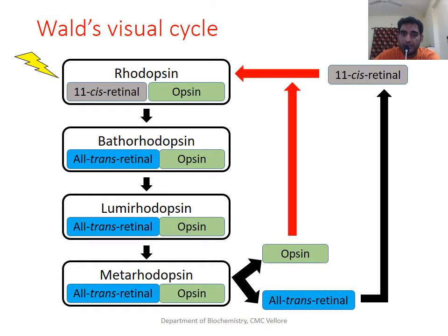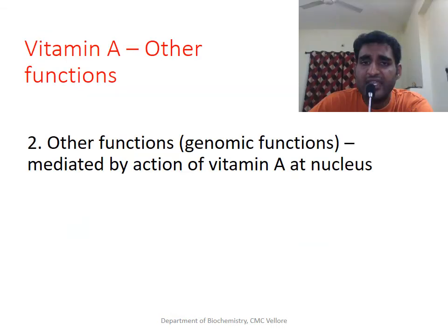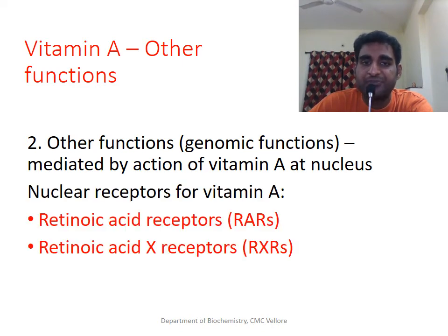The all-trans retinal can be converted back to its cis form and combined with opsin to regenerate rhodopsin for its next cycle. The other functions of Vitamin A are due to its actions at the genetic level. There are two receptors for Vitamin A in DNA: RAR and RXR receptors.